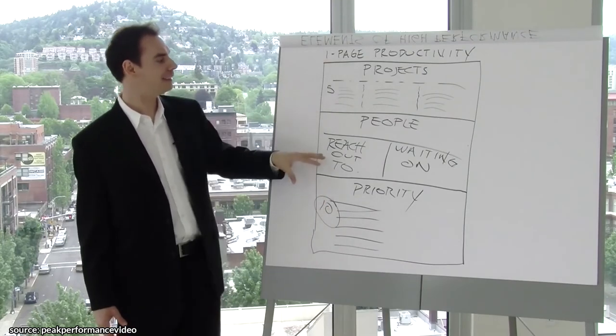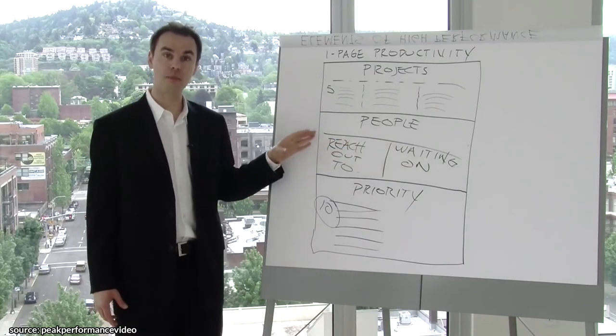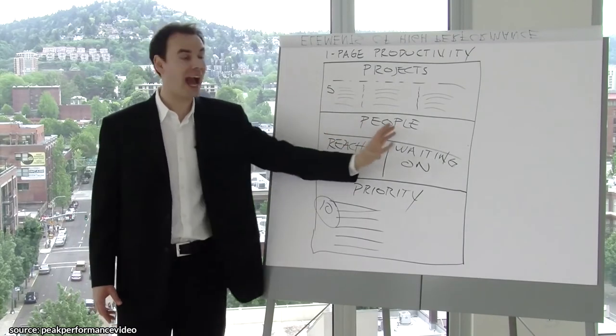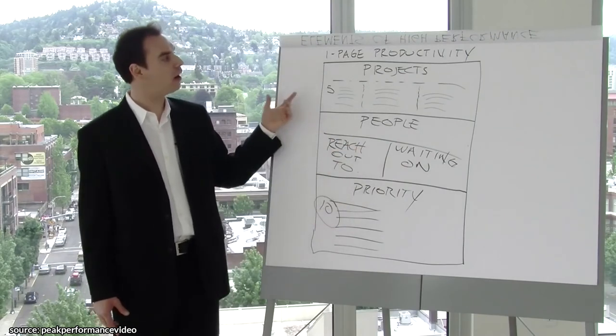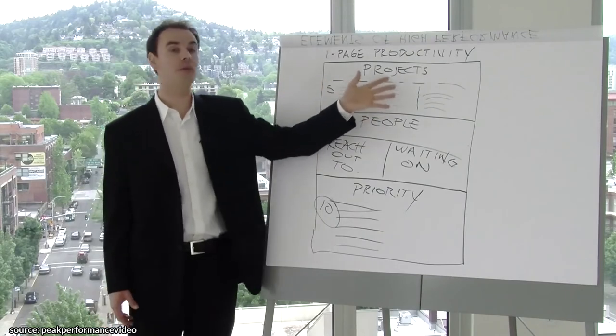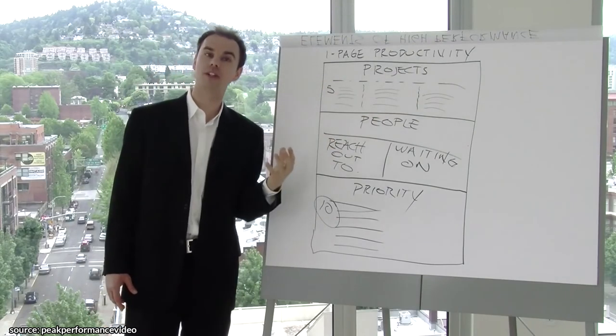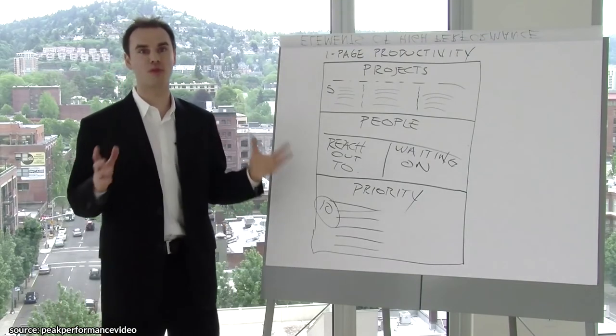Then I move up. Second, I'll go: who am I waiting on and who do I need to reach out to—the people category. I'll do that. Now often this will take most of the entire day. Then if there's any given time left in the day, I'll focus back on the bigger projects, thinking about what it's going to take to accomplish them. So that's the one-page productivity plan for high performers.